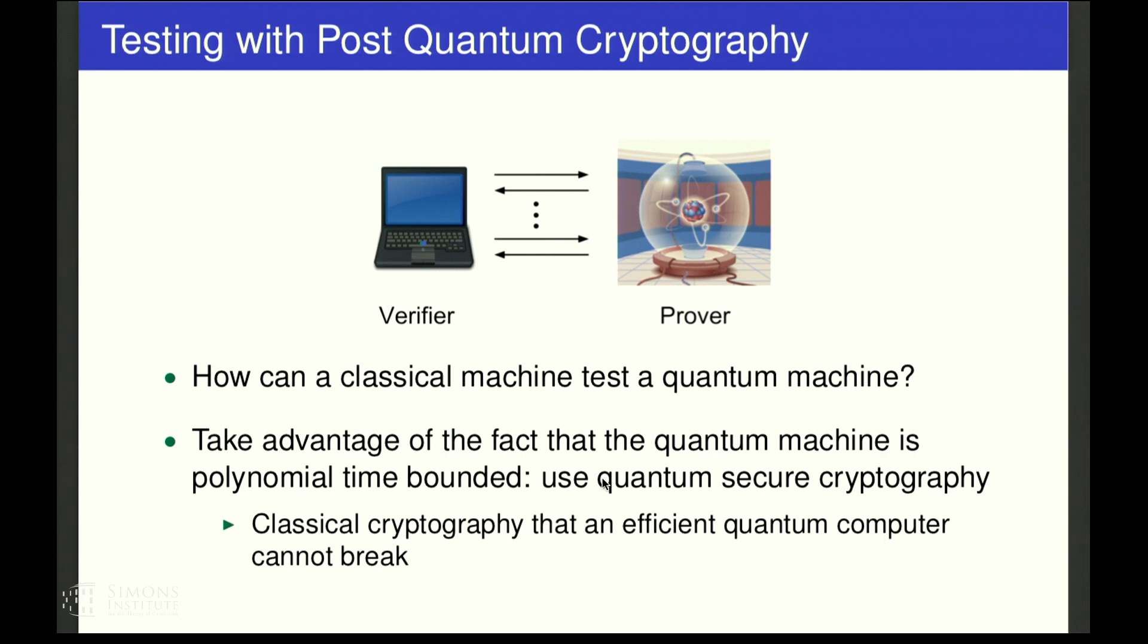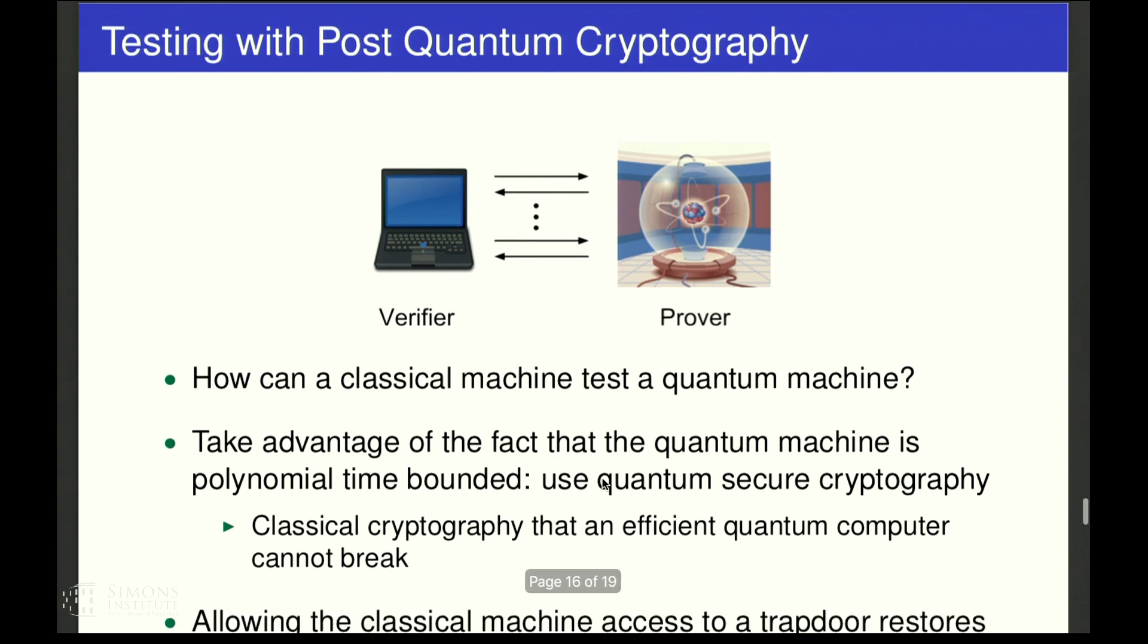So far, what I've said is that the verifier is much weaker than the prover. In order to level the playing field, all I've done is upper bounded the power of the quantum prover. But the verifier still remains much weaker than the prover. So in order to handle this, we can give the verifier access to a trapdoor.